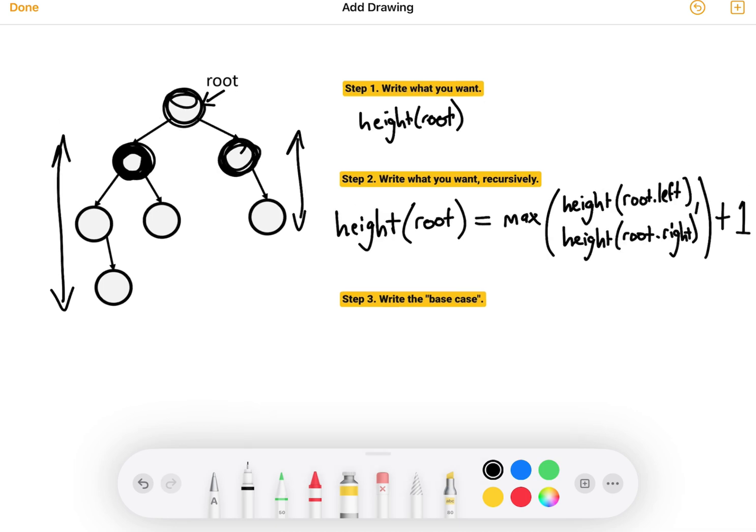So we've written the height of the root here in terms of the height of this guy and the height of this guy, but how does that help us? We don't know the height of this guy or this guy. Well, actually, we can figure those out the same exact way we figured out the height of the root.